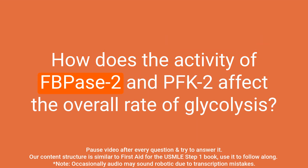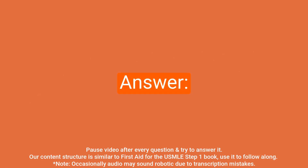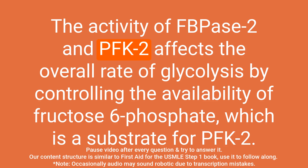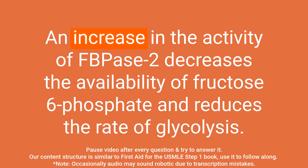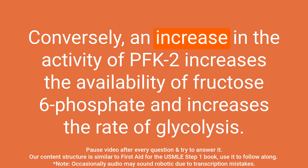Question: How does the activity of FB-PACE-2 and PFK-2 affect the overall rate of glycolysis? Answer: Their activity affects glycolysis by controlling the availability of fructose 6-phosphate, a substrate for PFK-2. An increase in FB-PACE-2 activity decreases fructose 6-phosphate availability and reduces glycolysis. Conversely, an increase in PFK-2 activity increases fructose 6-phosphate availability and increases glycolysis.